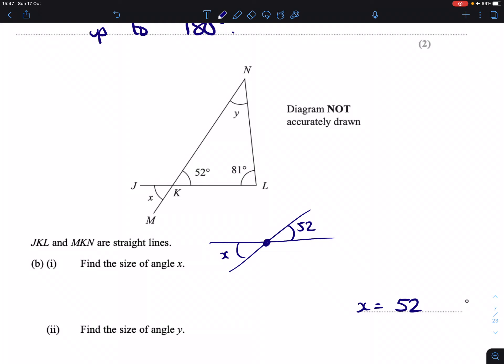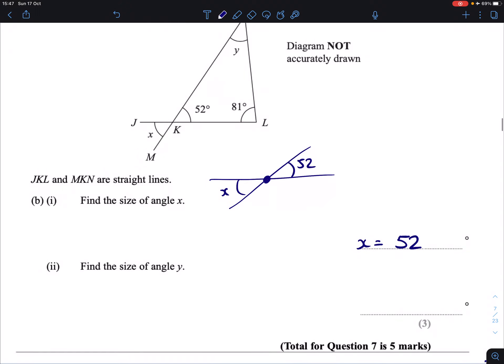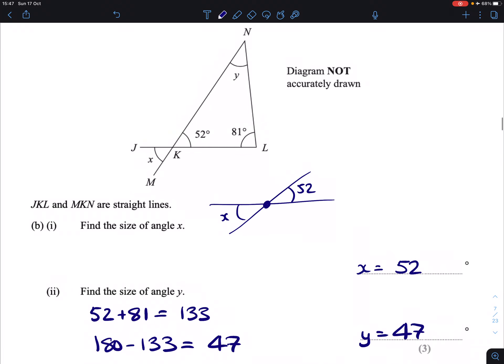Part 2: Find the size of angle Y. Angle Y is part of a triangle here. If I add together 52 and 81 to get 133, I can then take that away from 180, because angles in a triangle add up to 180. Therefore, Y is 47 degrees.